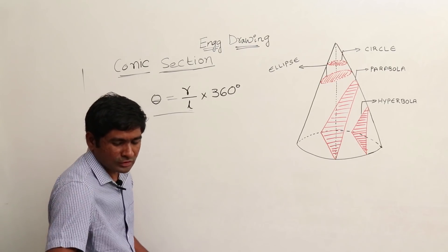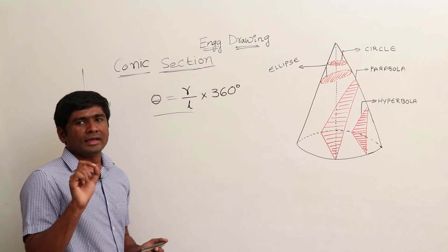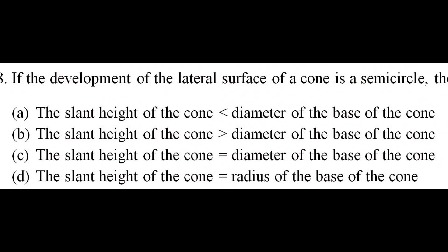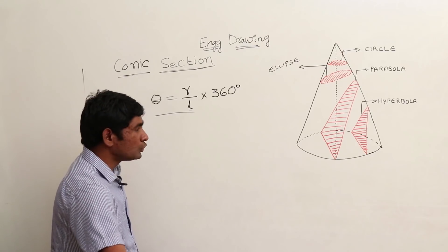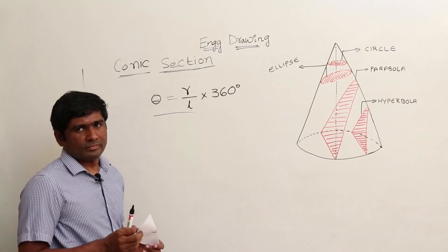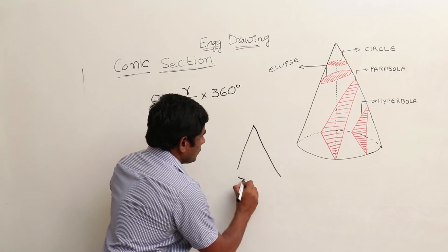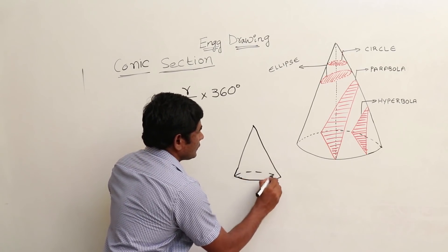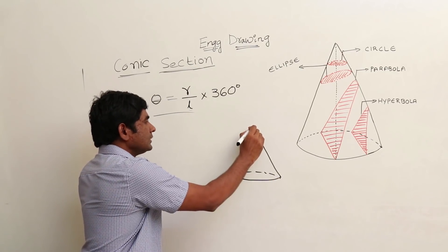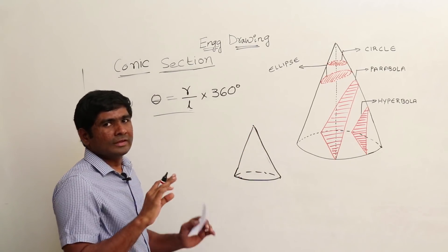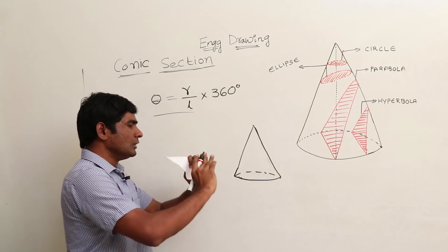Based on this formula, there was a question asked last year — question number 18 in Set A. The question is: if the development of the lateral surface of a cone is a semicircle, then... So here we have already seen how to create a cone from a sector. Now instead of creating a cone, I will take a cone, cut it along the lateral surface, and open it.